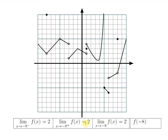What about f of negative 8? The three previous items were calculus questions, but f of negative 8 is actually an algebra question — it means what is the actual y-value when x equals negative 8. There's a hole at that spot, so that's not how we find the actual y-value. The actual output of the function is due to a solid point, and that y-value is 10. So we write f of negative 8 equals 10. Notice that the limit equals 2 and the function value equals 10 — these numbers don't have to match.